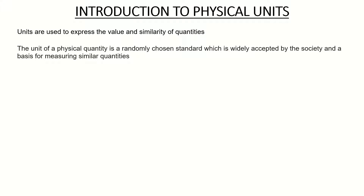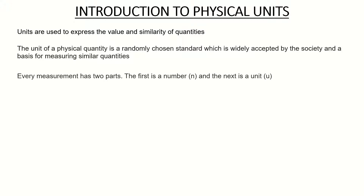The unit of a physical quantity is a randomly chosen standard which is widely accepted by society and is used as a basis for measuring similar quantities. Every measurement has two parts: the first part is a number, and the next part is a unit. In engineering, when you are working with quantities, it is very important to include the units, otherwise your answer might be marked wrong.